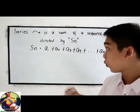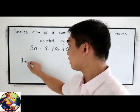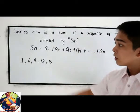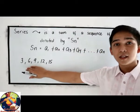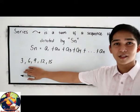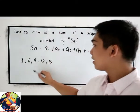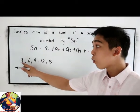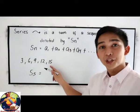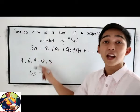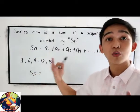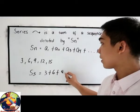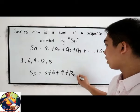Let's say we have the sequence 3, 6, 9, 12, 15. What would be the sum of our sequence? To get S5 — why S5? Because we have 1, 2, 3, 4, 5 terms. That means n is the number of terms you are going to sum up. So that is 3 plus 6 plus 9 plus 12 plus 15.